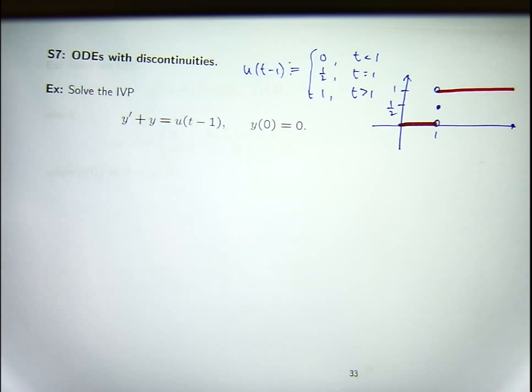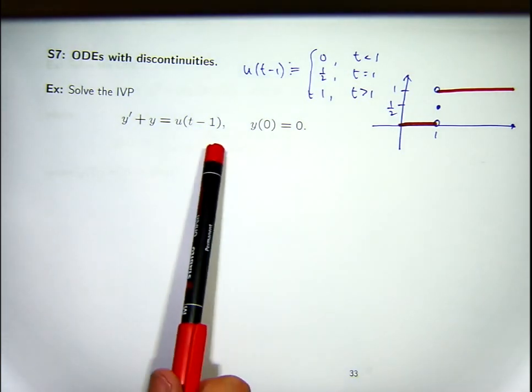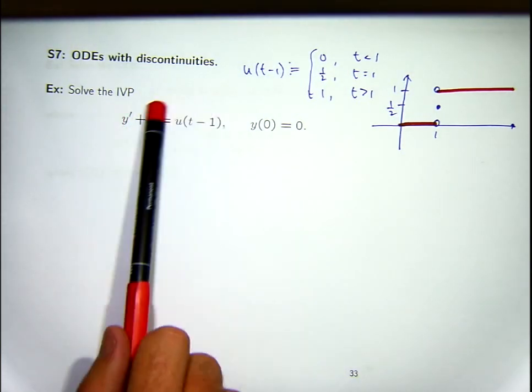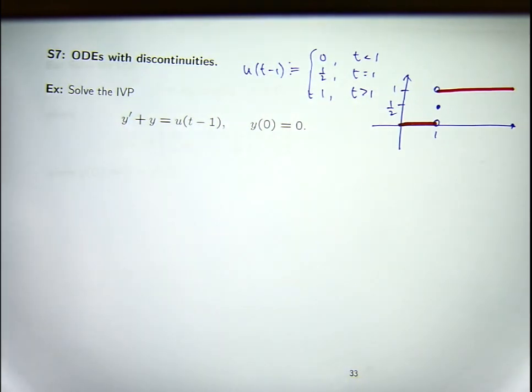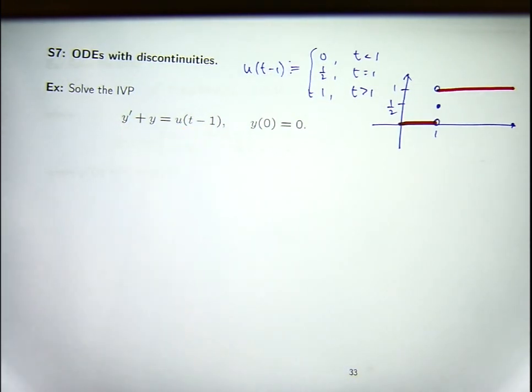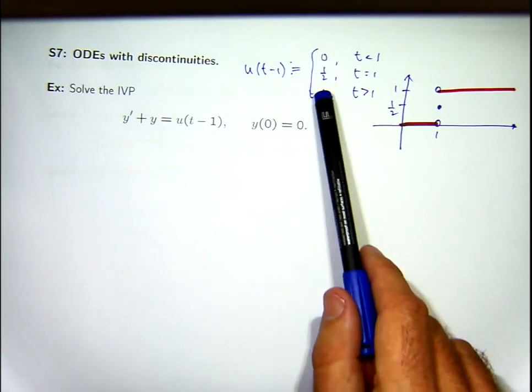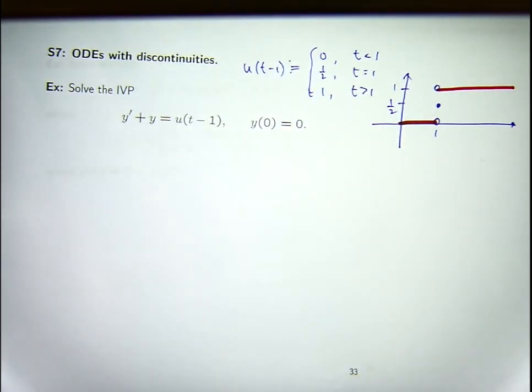You can see that our initial value problem involves a first-order ODE and some initial condition. The right-hand side of the ODE is a special function called the Heaviside step function, or a unit step function. Here I've basically defined the function, or written it out in a piecewise form, and then I've drawn the graph.